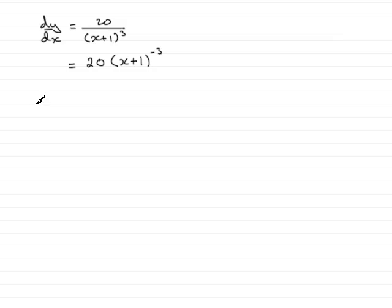And if I use the chain rule for this I get that d²y/dx² is equal to 20 multiplied by, now if I'm differentiating this by the chain rule I nominate the x+1 to be my t value.